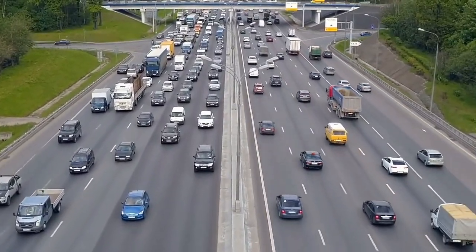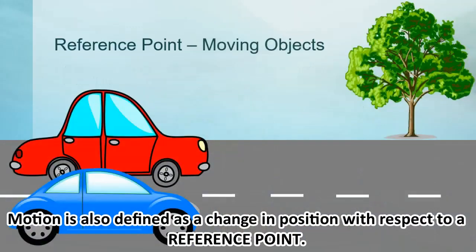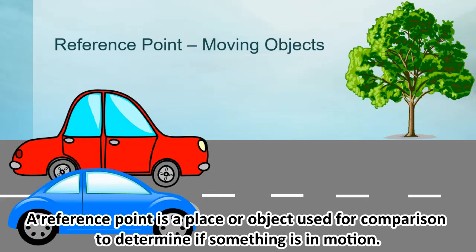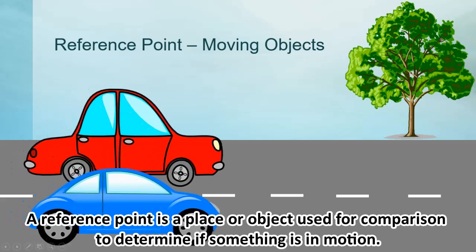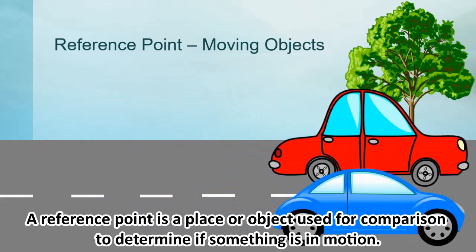When there is movement, there is motion. Motion is also defined as a change in position with respect to a reference point. A reference point is a place or object used for comparison to determine if something is in motion. An object is in motion if it changes position relative to a reference point.